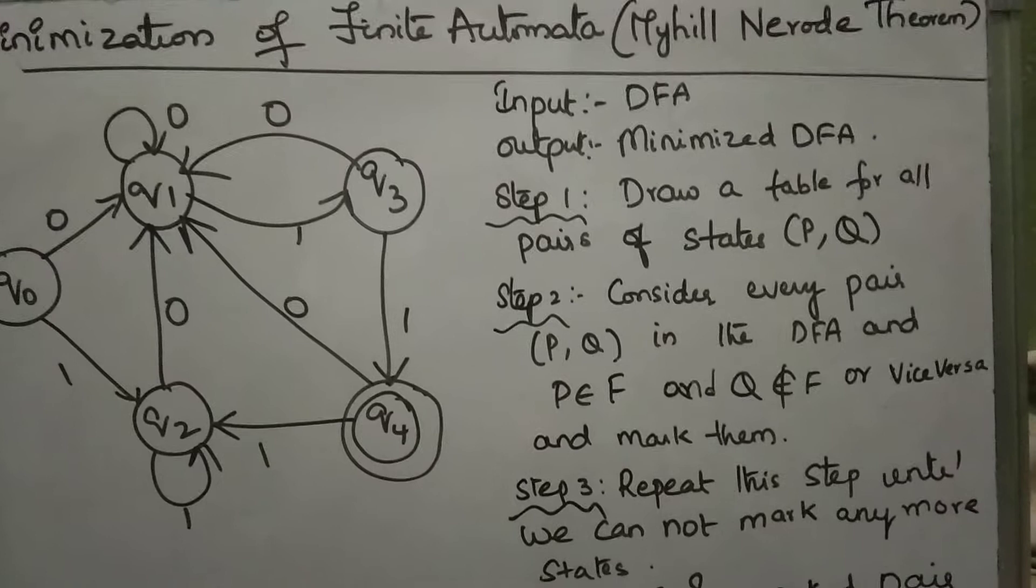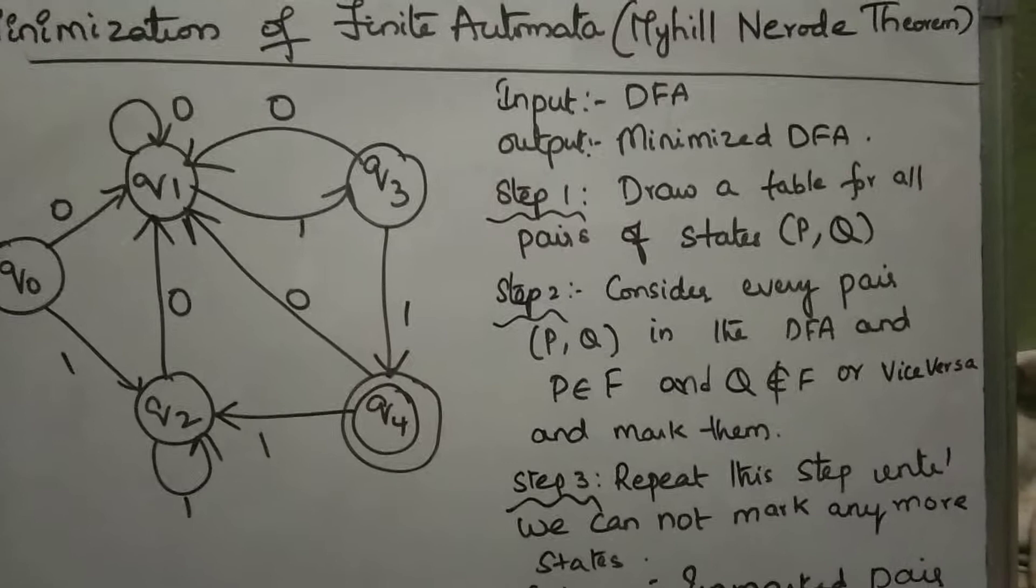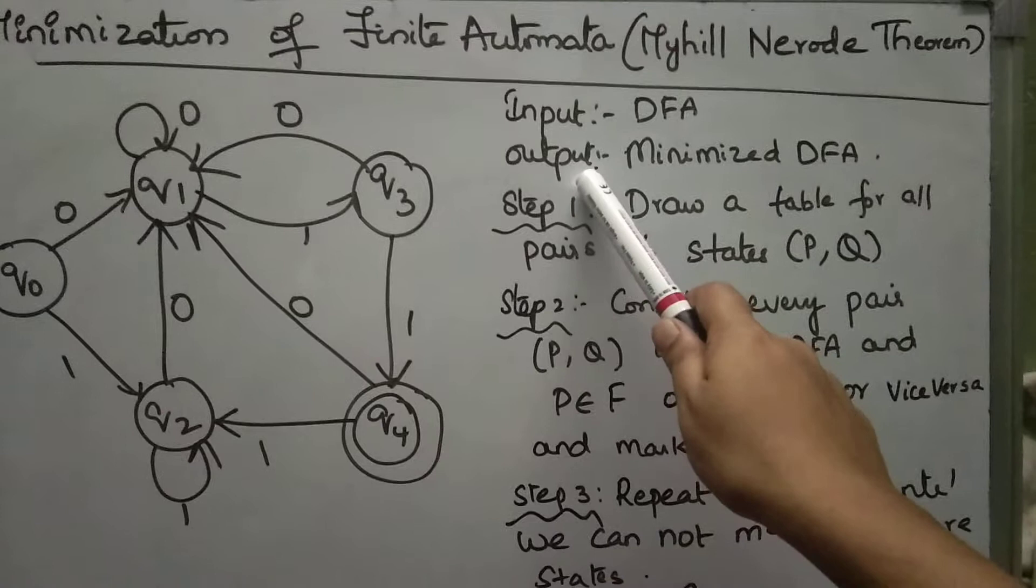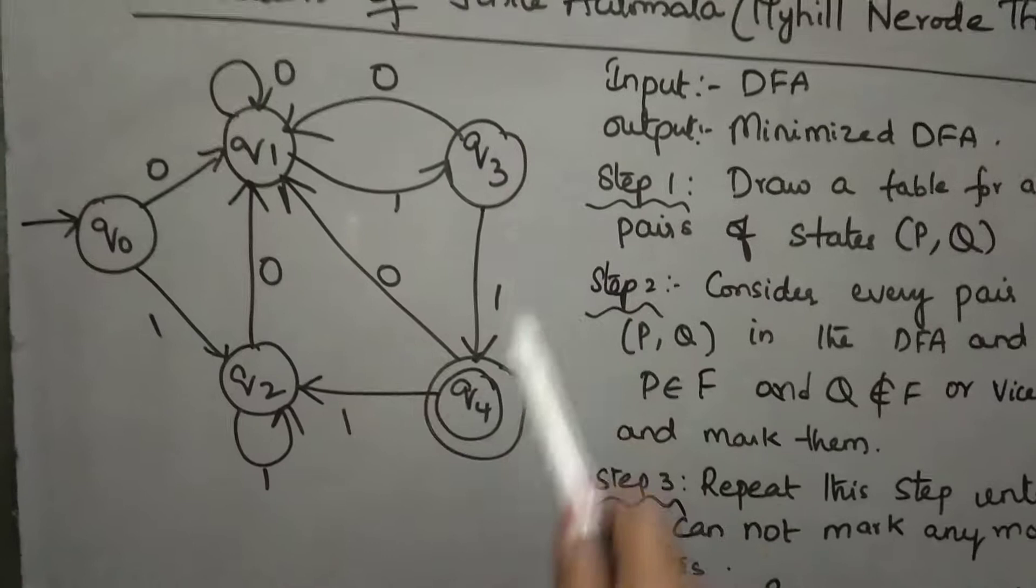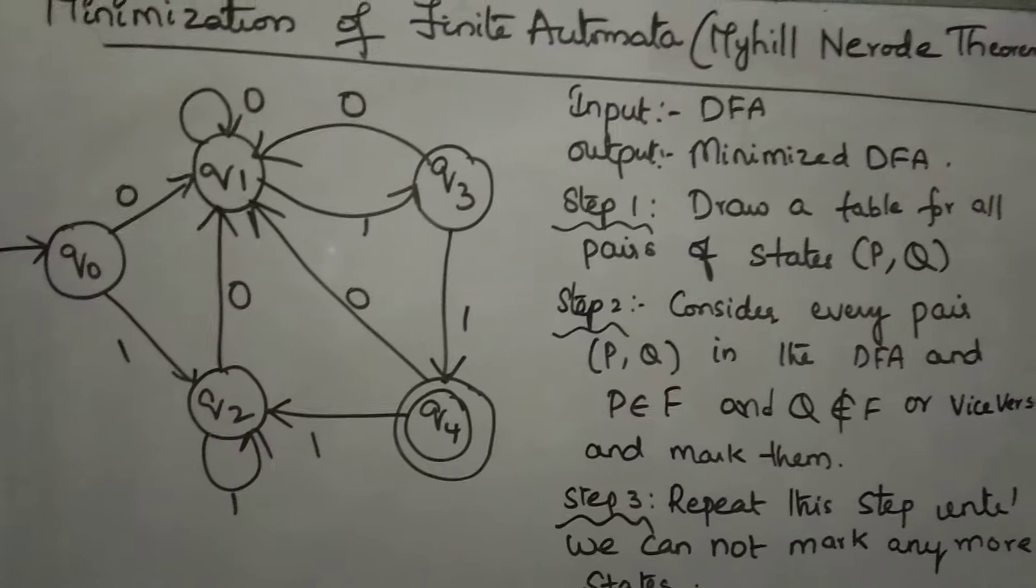First let us see what is the Myhill-Nerode theorem based upon that how we can minimize. The input what we give is nothing but your finite automata and the output is we got minimized DFA. In the first step you have to draw table for all pairs of states.